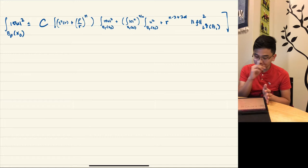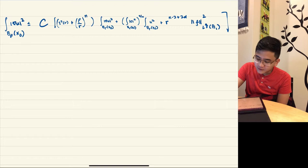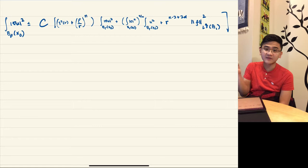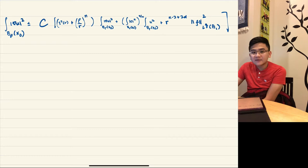Before we start, I want to point out a typo from the previous video. In the estimate we left off with, the radius of the ball is supposed to be ρ (rho), not r. Rho is smaller than r — in the previous video it was written as r, but it's supposed to be rho.